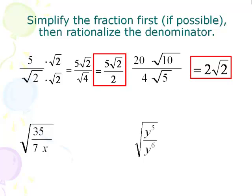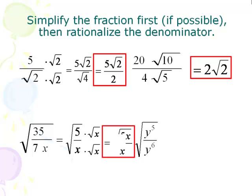On the next one, we have the square root of 35 over 7x. The fraction 35 over 7 can be reduced to 5 over x. Now multiply top and bottom by the square root of x, as seen in the bottom. We get square root of 5x on the top and just x on the bottom, since square root of x squared simplifies to just x.